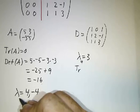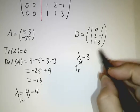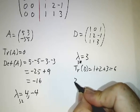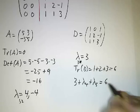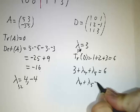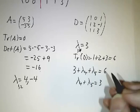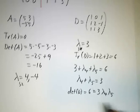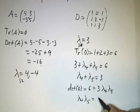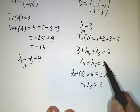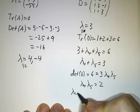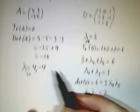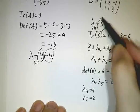So eigenvalues 1 and 2 of M are 4 and −4, and eigenvalue 3 is 3. The trace of D is 6, so 3 plus the 4th and 5th eigenvalues must equal 6, meaning λ4 plus λ5 equals 3. The determinant of D is also 6, and that equals 3 times λ4 times λ5, so λ4 times λ5 equals 2. Two numbers that add to 3 and multiply to 2 are 1 and 2. So the eigenvalues of this 5×5 matrix are 4, −4, 3, 1, and 2.